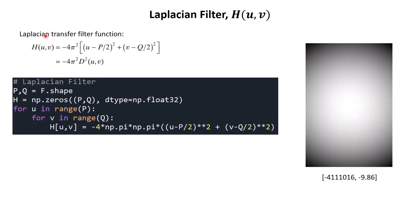The second step: we create the Laplacian filter function following this equation. We get variables P and Q, which are the total number of rows and columns. Next we create matrix H using the NumPy function np.zeros — this matrix H has size P by Q and initially all values are zero. Using a for loop and the Laplacian equation we change the values in matrix H and with that we get our Laplacian filter.